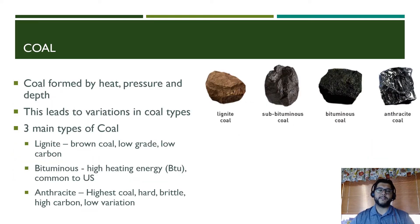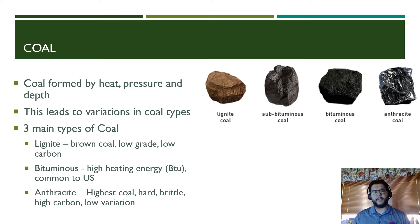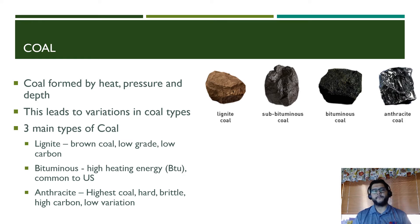Then you get to the true fossil fuels used for heating and energy production, and that's coal. Coal is plant material that has been heated and pressurized and pushed down into the ground through millions of years. It's important to know the variations because they can appear as AP exam questions. There are three main types. Lignite coal tends to be pretty brown, with low carbon amounts — it's low grade.